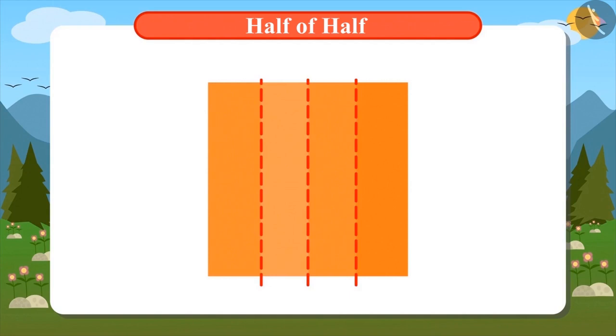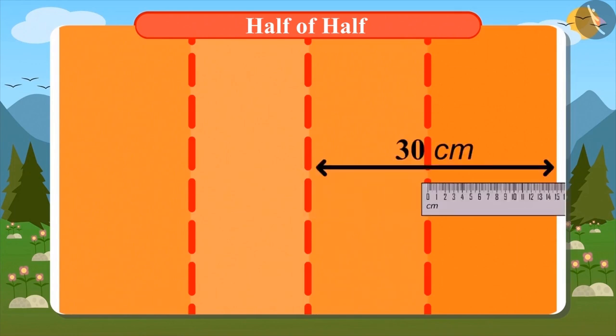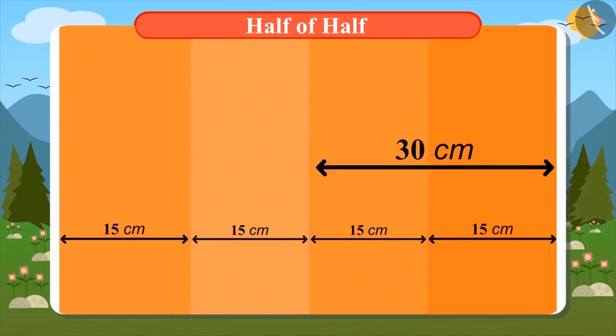Now, see. On both the halves of this paper, there are marks. And now, you can measure this too. Okay. I will measure them. One half of this paper is 30 centimeters and half of half is 15 centimeters. Now, this paper is divided into four equal parts. Yes.